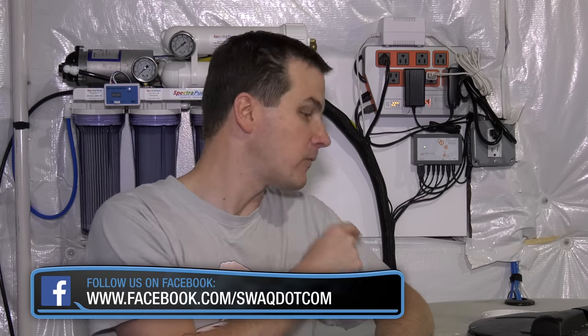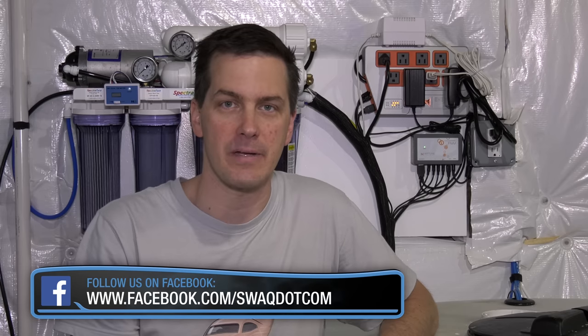The only piece of automation that's missing on the Neptune Systems Apex for this mixing station is to add a PM1 module so I can control the temperature inside the saltwater mixing vat. I would do that with a temperature probe and then plug in the heater in the saltwater mixing vat into an outlet on the Energy Bar 832. In this case, the owner is doing constant water changes so we don't feel the need to heat the water in the mixing vat.